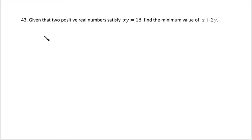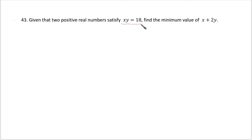Given that two positive real numbers satisfy xy = 18, find the minimum value of x + 2y. This is an optimization question because it's asking for a minimum value. When you see an optimization question, you should look for an equation that's usually given — that's called a constraint — and the target function to minimize or maximize, that's called your target.